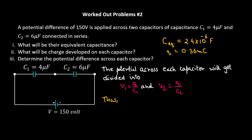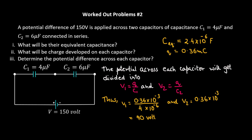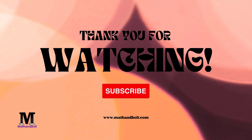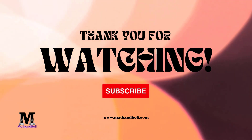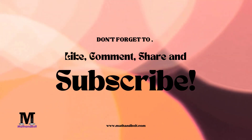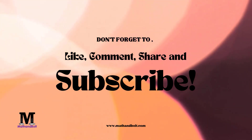Thus V1 equals 0.36 times 10⁻³ divided by 4 microfarad, which gives us 90 volts. And V2 equals 0.36 times 10⁻³ divided by 6 times 10⁻⁶, which gives us 60 volts.